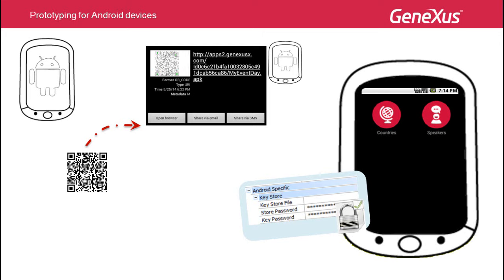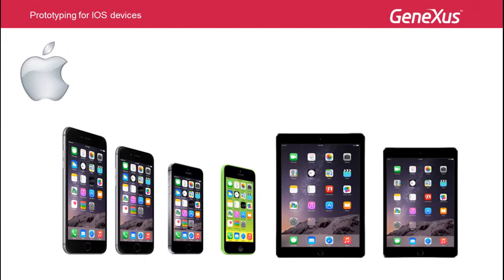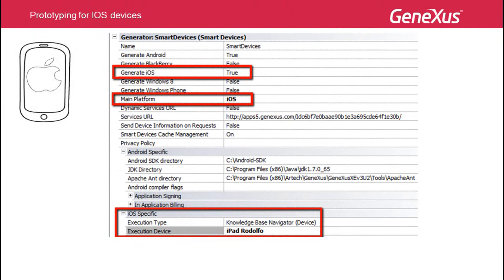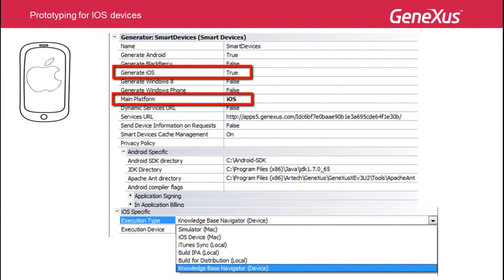Now we'll see how to prototype in other platforms, starting with iOS. To prototype on devices such as the iPhone or iPad, which run on iOS, first we set the Smart Device Generator properties. We also have different options to run the application, so it's necessary to indicate how it will be run by setting the Execution Type property within the iOS-specific group of properties.